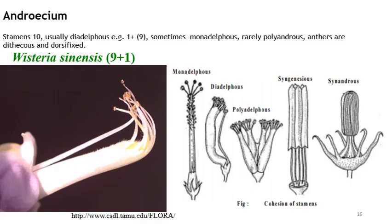Now we have the third whorl of the flower, that is the androecium. The androecium consists of stamens, each made up of an anther and a filament. The number of stamens is 10, which usually are found in two groups.